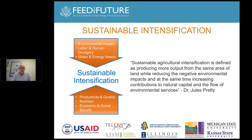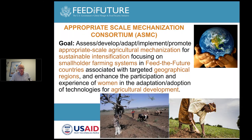Intensification relates to productivity, improved nutrition, and economic benefits, while the sustainability side looks at environmental impact, reducing drudgery, and addressing water and energy needs. Our overall goal for the consortium is assessing, developing, adapting, implementing, and promoting appropriate scale agricultural mechanization for sustainable intensification, focusing on smallholder farming systems connected with Feed the Future countries and particular geographical regions, with a very important emphasis on enhancing the participation and experience of women in the adoption of technologies.